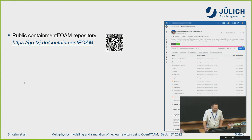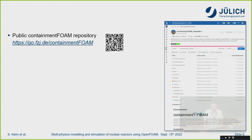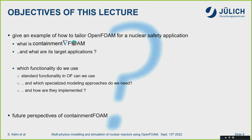If you want to get ContainmentFoam, there's a very easy way. We put it into a short link: go.fzj.de/containmentfoam — beware, the last four letters are capital. You can scan the QR code and end up in the repository. You'll find an all-in-one make script; you just run it and it will install ContainmentFoam as an add-on to your OpenFOAM version — specifically the Foundation version 9, not ESI.